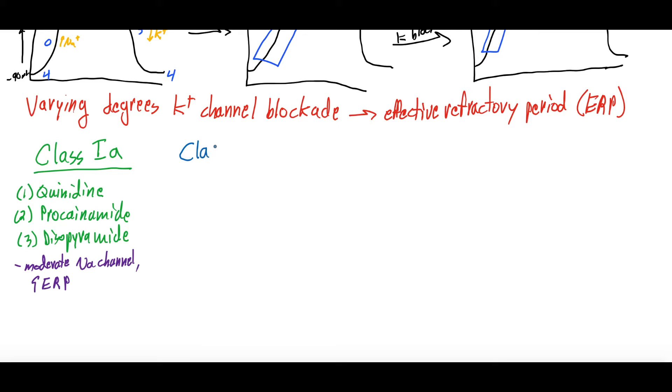There's Class 1B anti-arrhythmics, and this includes things like lidocaine, which is one that we will see clinically, tocainide, which I have personally never used, and mexiletine. And these are weak sodium channel blockers, and they actually decrease the effective refractory period.